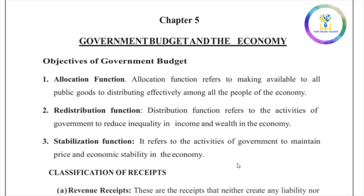We are going to learn about the objectives of government budget — what is the budget. We are going to learn 3 functions: allocation function, redistribution function, and stabilization function. Allocation function refers to making public goods available and distributing them effectively among all the people of the economy.